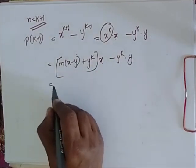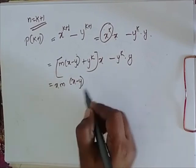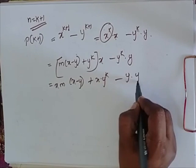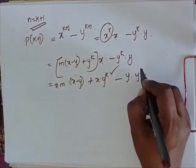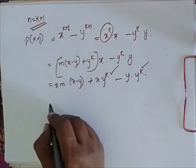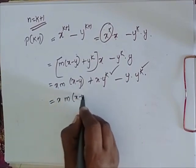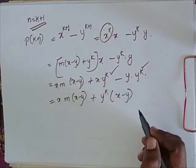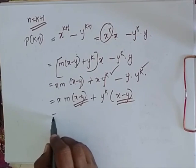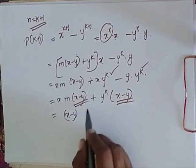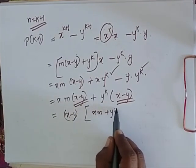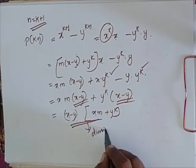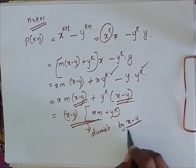Now I am going to split it out: xm into x minus y plus x into y power k minus y into y power k. Now I have y power k common, so I am going to take it outside. So: xm into x minus y plus y power k into x minus y. Taking x minus y commonly outside gives x minus y into xm plus y power k. Seeing this, it is divisible by x minus y. So it is true for P of k plus 1.